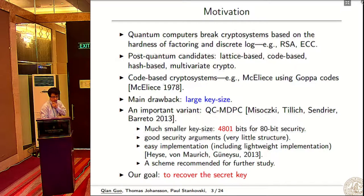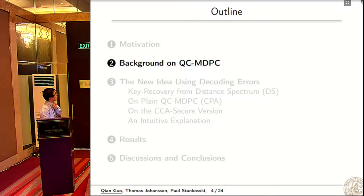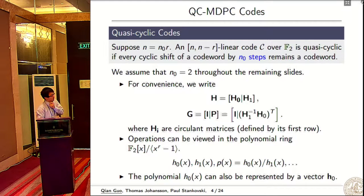Our goal is to recover the secret key. Let's start with background on QC-MDPC. Quasi-cyclic codes are linear codes where every cyclic shift by this step remains a codeword. We assume N0 is 2, and if we do some index permutation, we can write the parity-check matrix in this form.